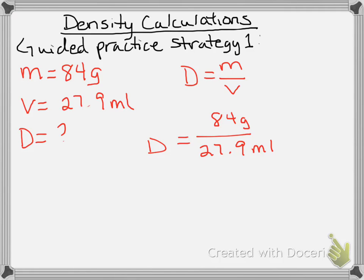And if we simply plug that into the calculator, 84 divided by 27.9, my density is equal to three point, let's go ahead and do two decimal places, which is the hundredth place, zero one grams per milliliters.